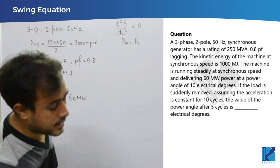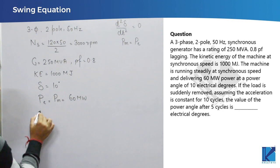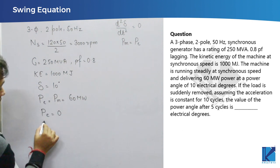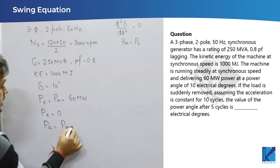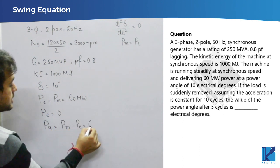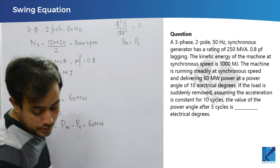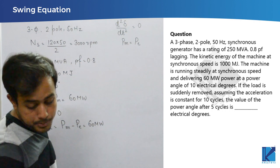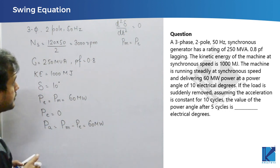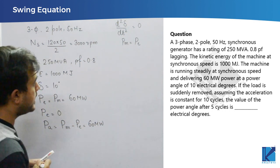Then it says if the load is suddenly removed, so load in a generator is electrical, so if it becomes 0, then there will be accelerating power which is Pm minus Pe, which is 60 megawatt. Now, we need to find the value of power angle after 5 cycles. Delta we need to find.